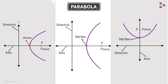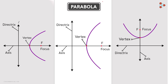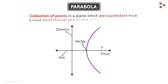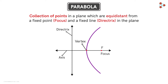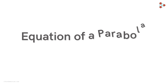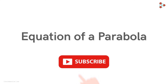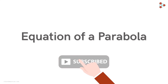So in this video, we saw what a parabola is. It is a collection of all points in a plane that are equidistant from a fixed point called the focus and a fixed line called the directrix. In the next video, we will find the equation of a parabola. To stay updated, please subscribe to our channel.